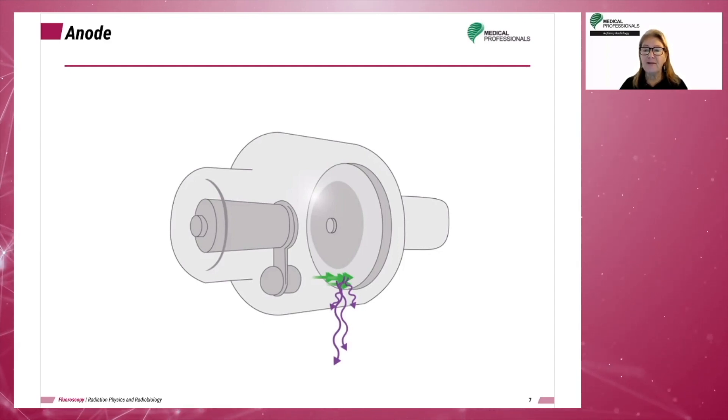The electrons at the focusing cup have potential energy, so all that is needed is voltage applied to the cathode to cause them to travel to the anode. The voltage is applied and off they go.